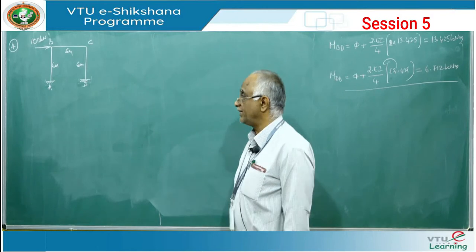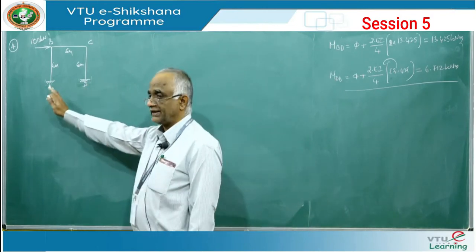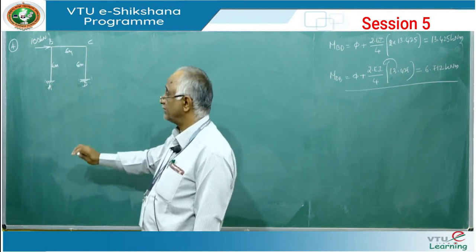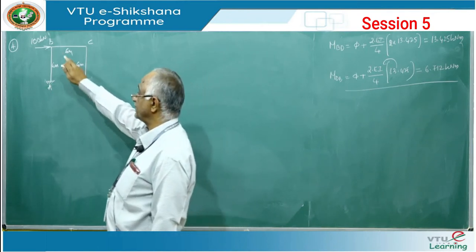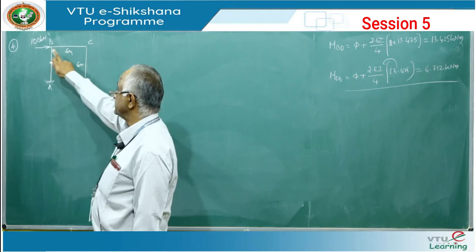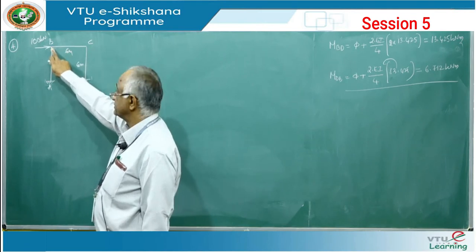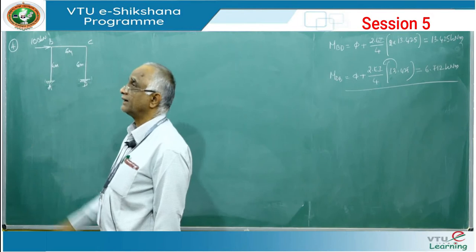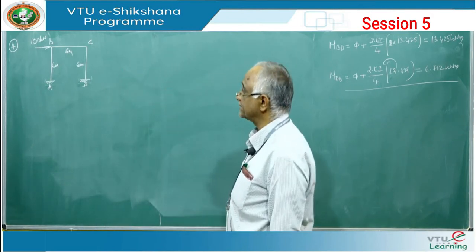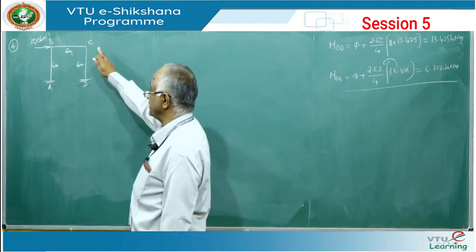How many degrees of freedom? At A and D there are no degrees of freedom because both are fixed. The only possibility of degrees of freedom is at B and C. Since it is a rigid joint, it can only rotate. So one degree of freedom is rotation at B, and the second is rotation at C.